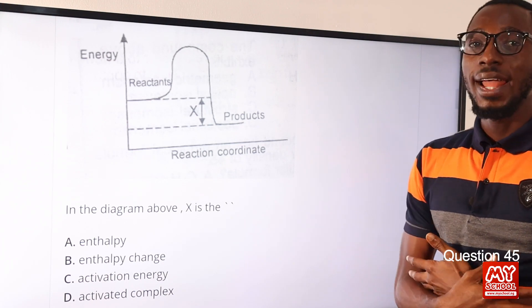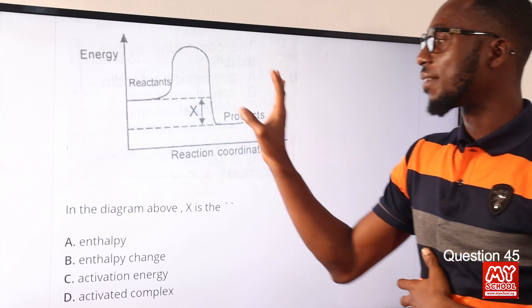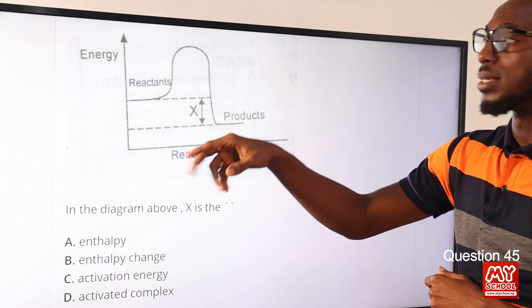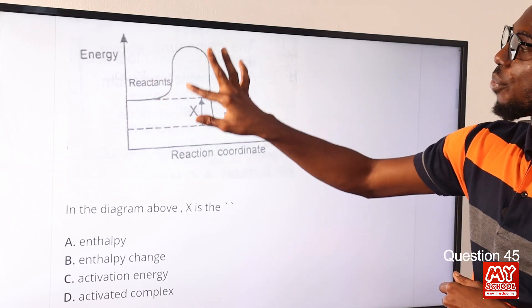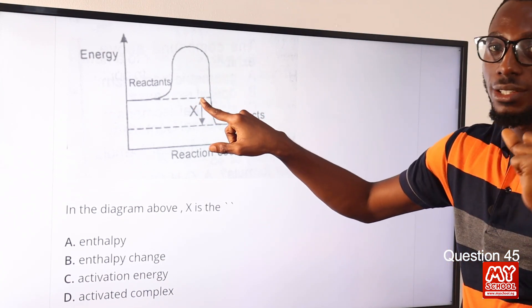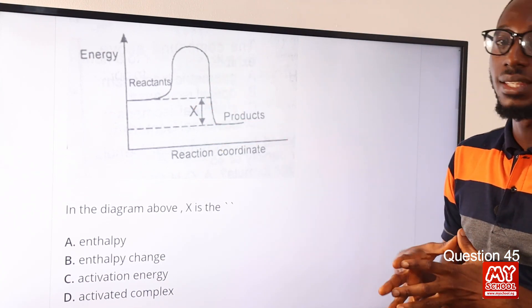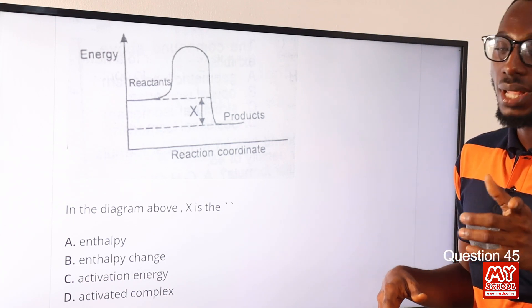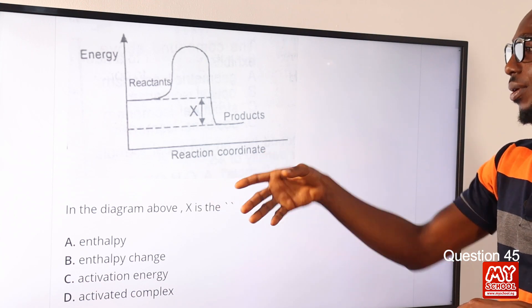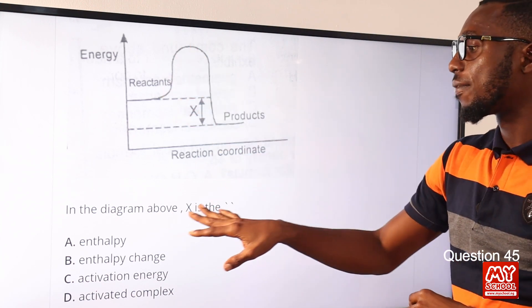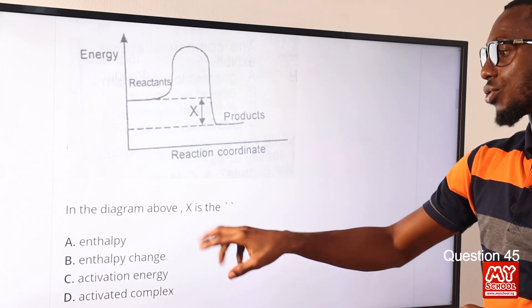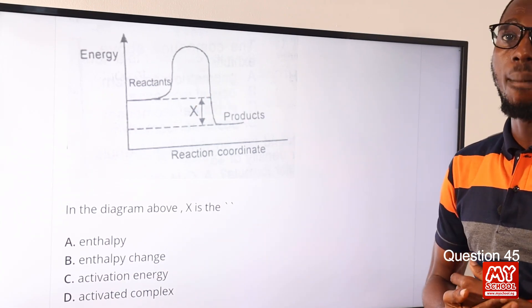Question 45. In the diagram above, X is what? This is an exothermic reaction. We have the reactants, here we have the activation energy, this is the enthalpy change which has a negative value for an exothermic reaction, and then we have the product formed. So in the diagram above, X is the enthalpy change. Activation energy is here. The correct option is option B.